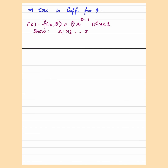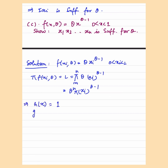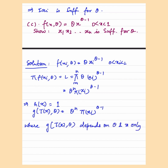Let's move on to another example. We are given f(x; theta) equals theta times x to the power theta minus 1. We have to show that the product of xi for i equals 1 to n is sufficient for theta. The likelihood function can be written as theta to the power n times the product of xi to the power theta minus 1. Here h(x) equals 1 and g(T(x), theta) equals theta to the power n times product of xi to the power theta minus 1. g depends on theta and x only through the sufficient statistic, which is the product of xi.